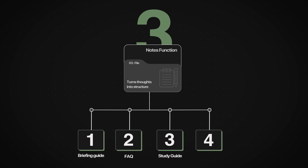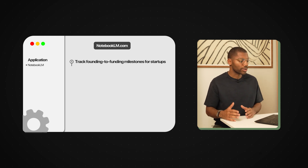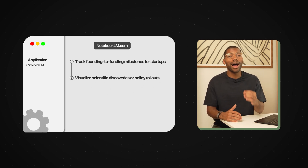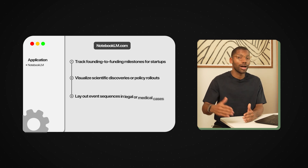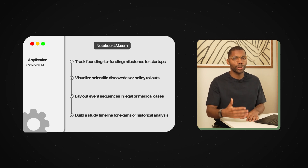Format number four automatically transforms all the events, milestones, and changes over time from your AI research and puts them in chronological order. Putting large amounts of information in chronological order is one of the best ways for humans to retain information, and it helps you see big patterns you can dive into with a click of a button. This format is called Timeline. You can use it for tracking startup funding milestones, visualizing scientific discoveries or policy rollouts, laying out event sequences of legal or medical cases, or building a study timeline for exams and historical analysis.